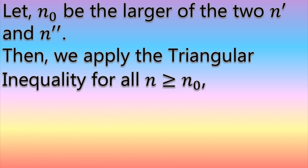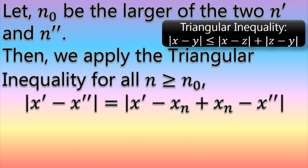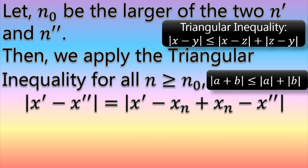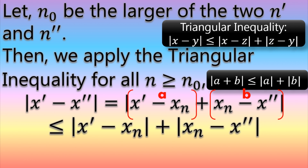Next, apply the triangle inequality for all n greater than or equal to N₀. To apply the triangle inequality to x' and x'', we add and subtract xₙ from x' − x''. The inequality states |a + b| ≤ |a| + |b|. In our case a = x' − xₙ and b = xₙ − x'', so this implies |x' − x''| ≤ |x' − xₙ| + |xₙ − x''|.